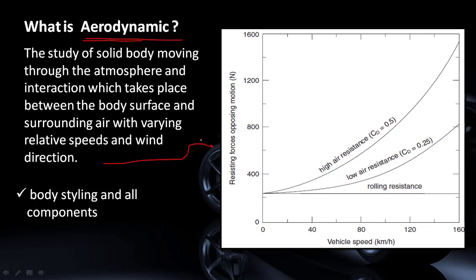These fundamental basics we can understand with the help of this plot, which shows vehicle speed in kilometers per hour versus resisting force opposing the motion. This plot is generated for two body stylings: one we can consider as a streamlined body which has low air resistance, and one as a poor streamlined body which has slightly higher air resistance. The difference is in terms of coefficient of drag, and this comparison is done with constant rolling resistance of the vehicle.